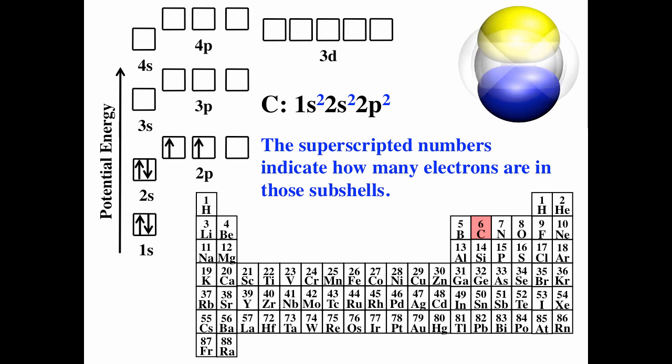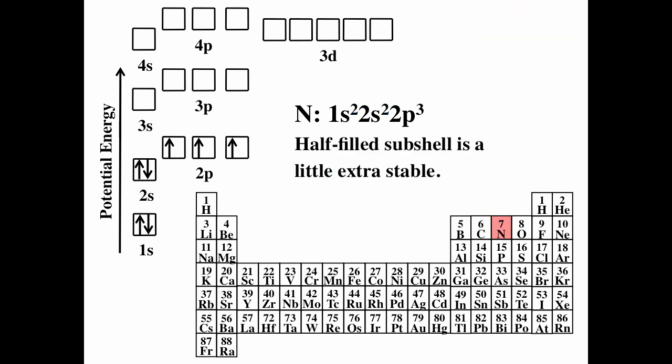For nitrogen, element number seven, we give each electron its own orbital as much as we can, following Hund's rule. We now have three unpaired electrons, so nitrogen should be more paramagnetic than carbon. The more unpaired electrons, the more paramagnetic. It's also interesting that having a half-filled subshell is a little extra stable — nitrogen atoms are a little more stable than we would expect, which is why nitrogen often doesn't follow periodic trends.